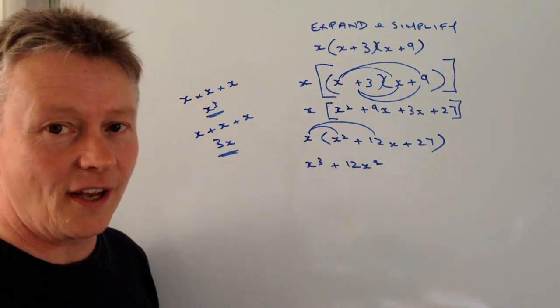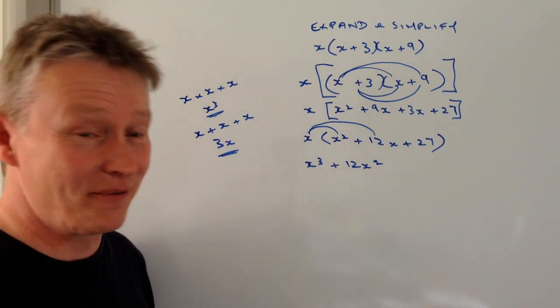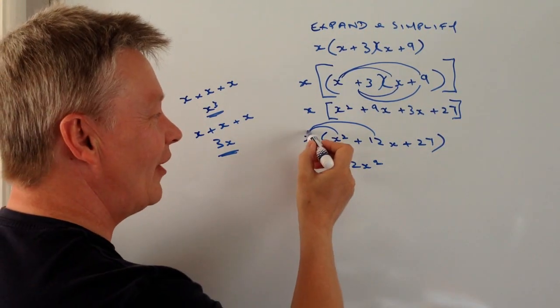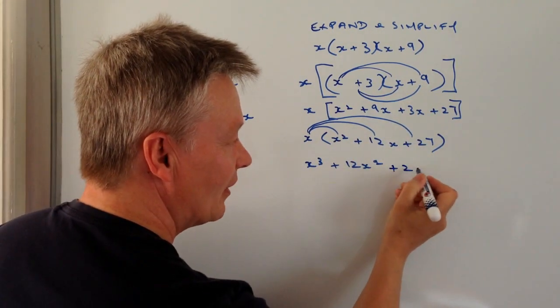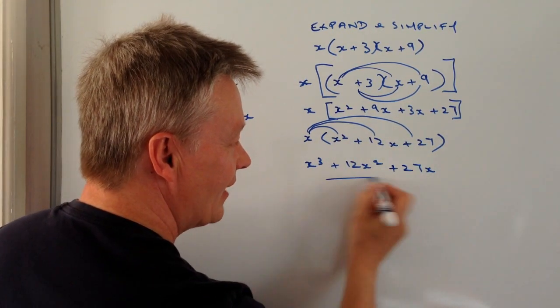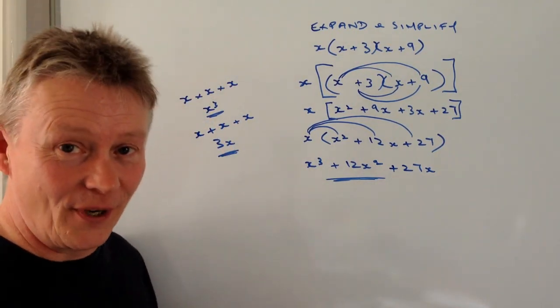Because I've got two lots of x there. Not two lots of x. I've got x times x, which is x squared. And then finally, I've got x times plus 27 is going to be plus 27x. And that would answer this particular question.